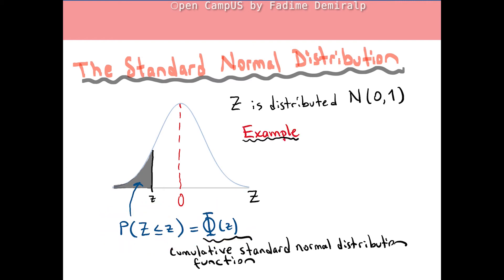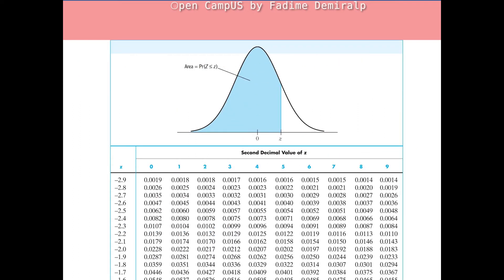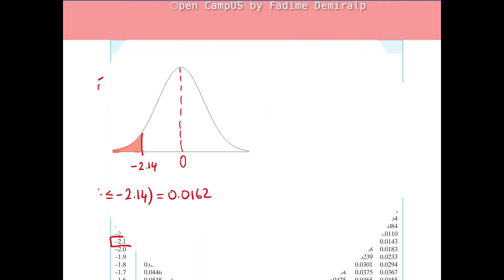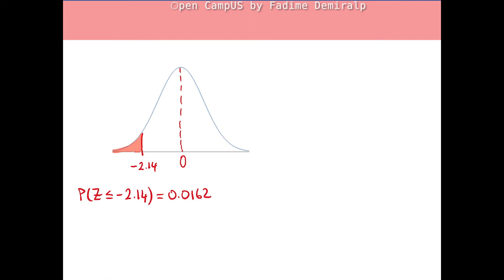Let's have an example. What's the probability that capital Z is less than or equal to negative 2.14? Here we are looking for the area to the left of negative 2.14 on the horizontal line, which is given by Phi(-2.14). Using the table of cumulative standard normal distribution, we look up negative 2.1 in the z column, then find the column for the second decimal value 4. The result is 0.0162.